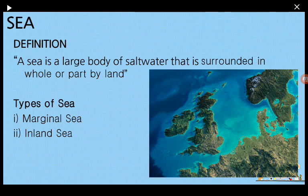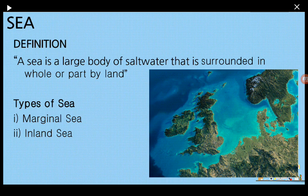Welcome to the second part of the chapter on water bodies. In our previous class we learned about ocean. Today we shall be learning about sea. A sea is a large body of salt water that is surrounded wholly or in part by land. Sea is a part of ocean and it is much smaller and shallower compared to oceans. Seas are closer to the continent or your landmasses.